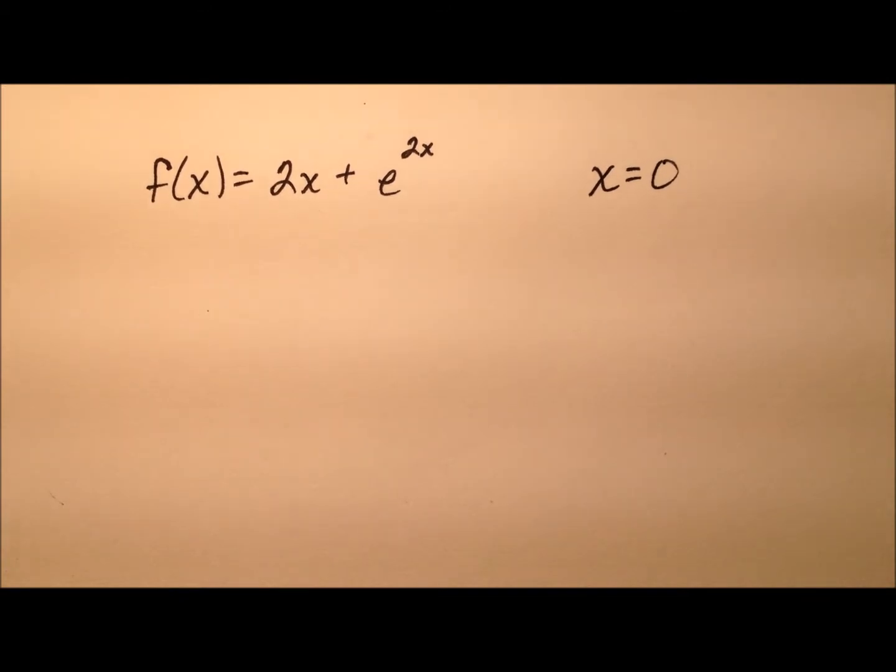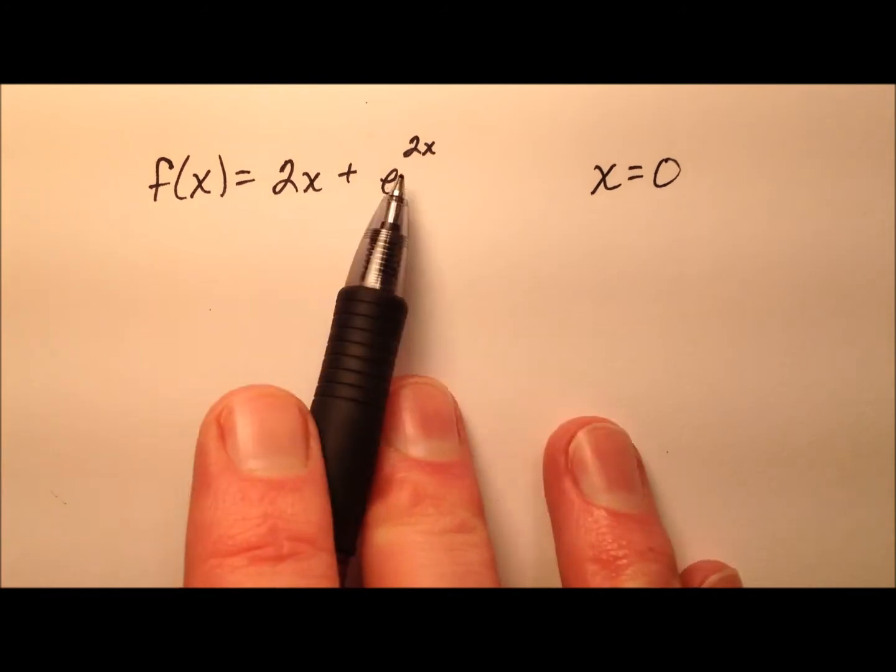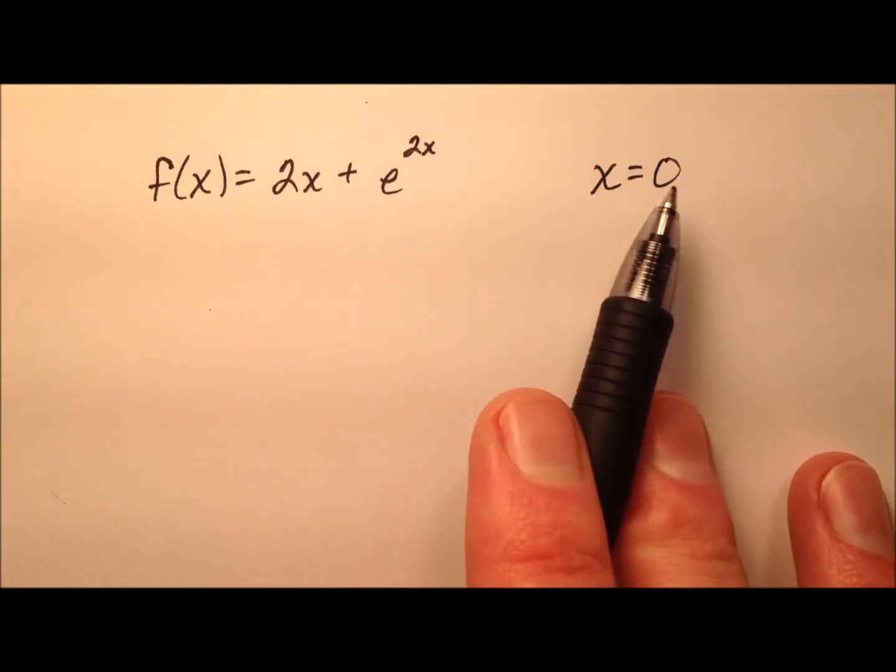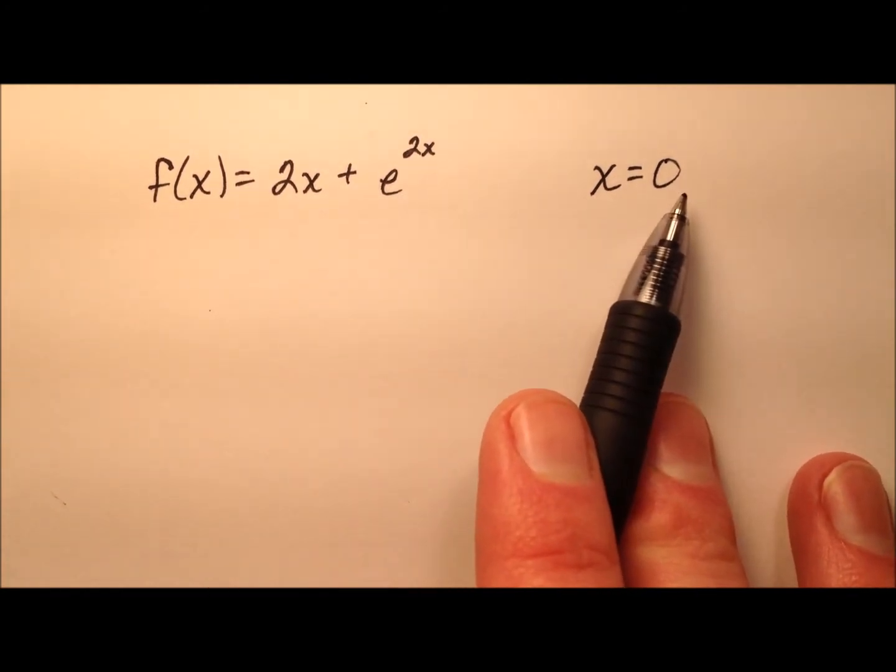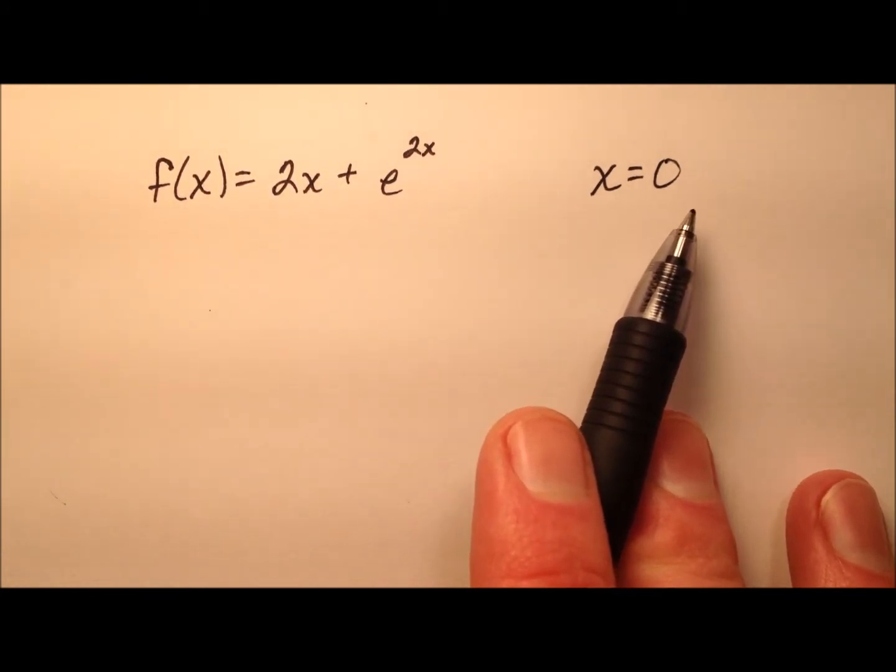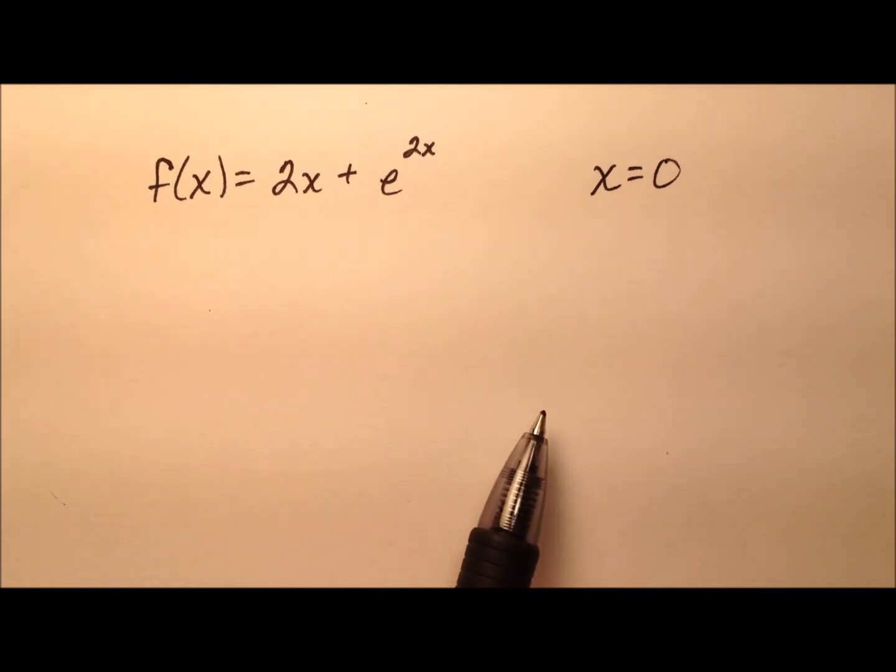In this example, I'm going to write an equation of the line tangent to the graph of f at x equals 0. I'll need two pieces of information to write the equation of a line: some point that it passes through and the slope.